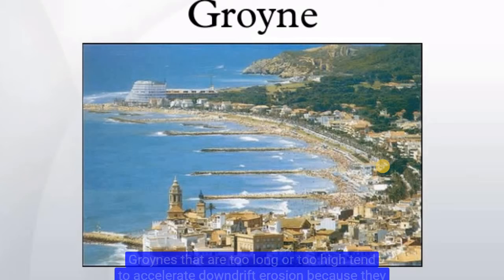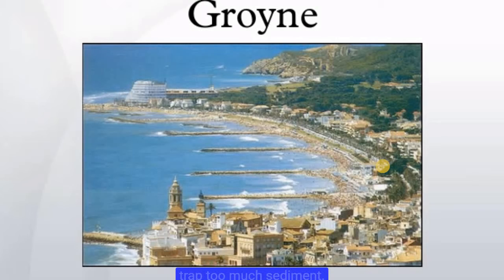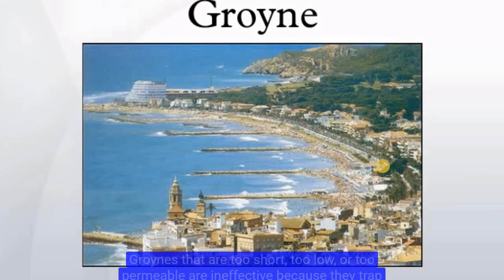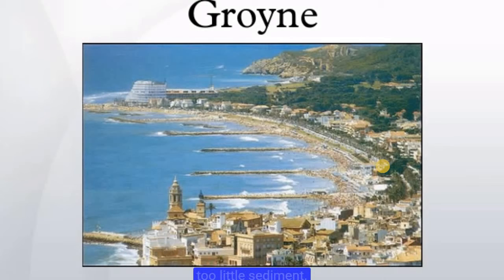Groins that are too long or too high tend to accelerate down drift erosion because they trap too much sediment. Groins that are too short, too low, or too permeable are ineffective because they trap too little sediment.